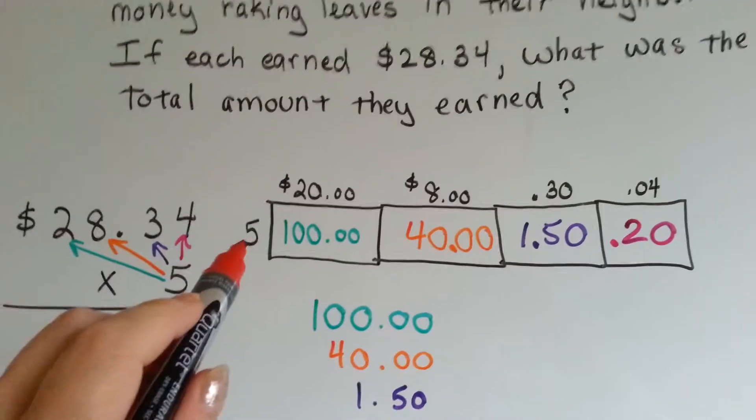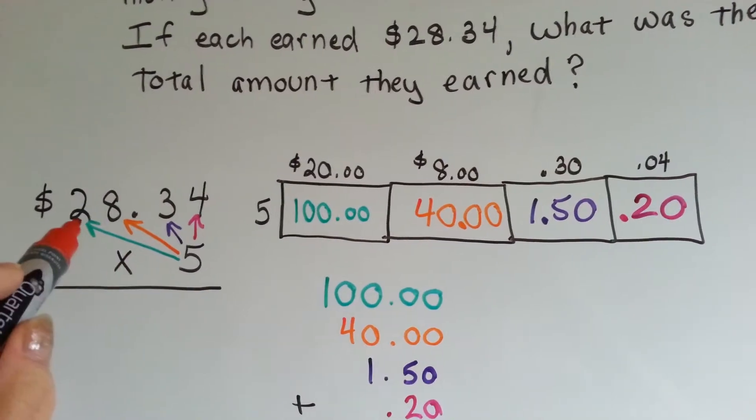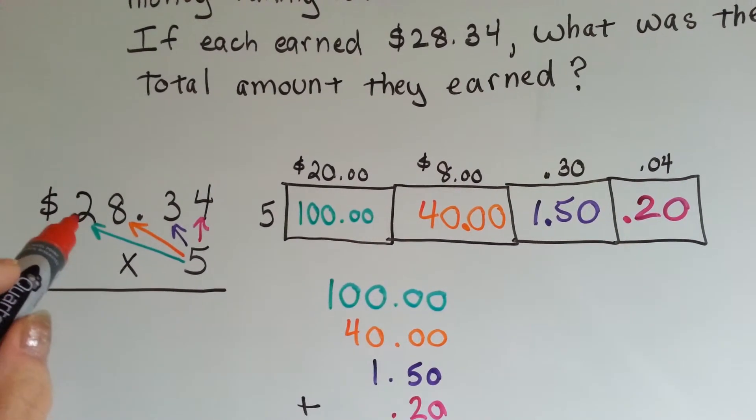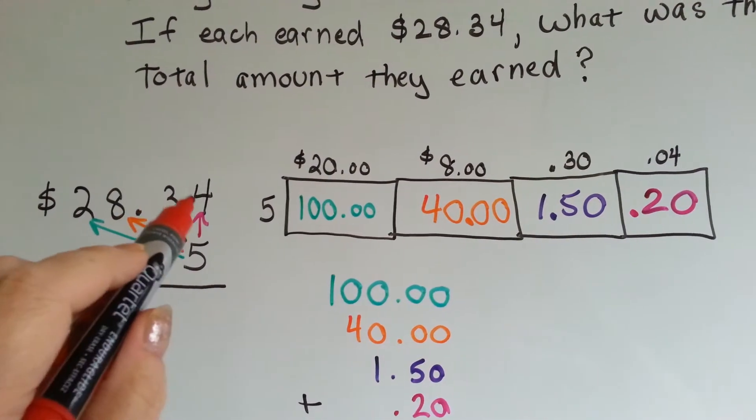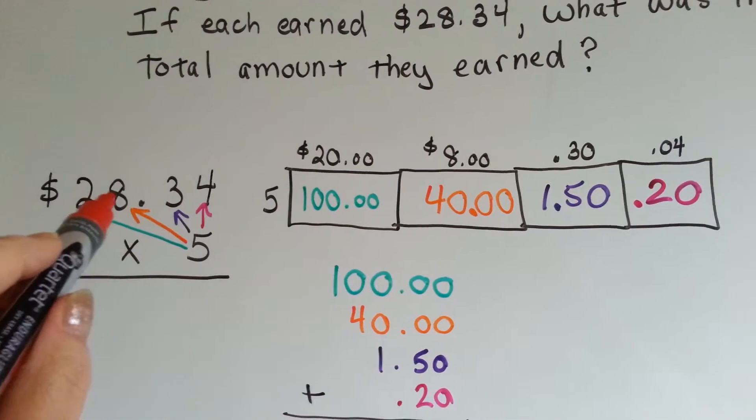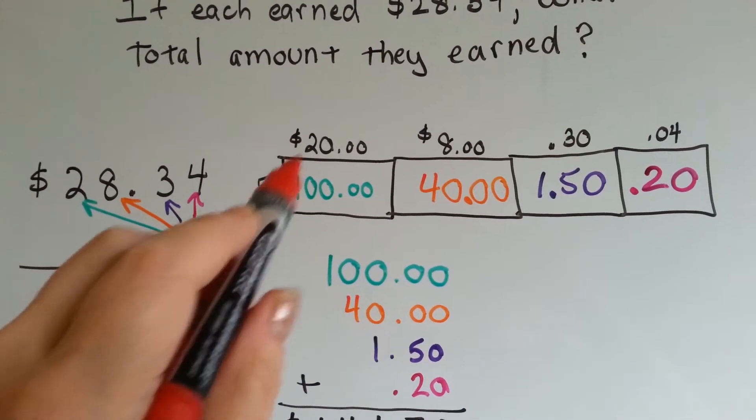So, the partial products way is to multiply 5 times $20, because that's in the $20 space. This period here means these are the cents and these are the dollars. So, that's in the tens of dollars space.